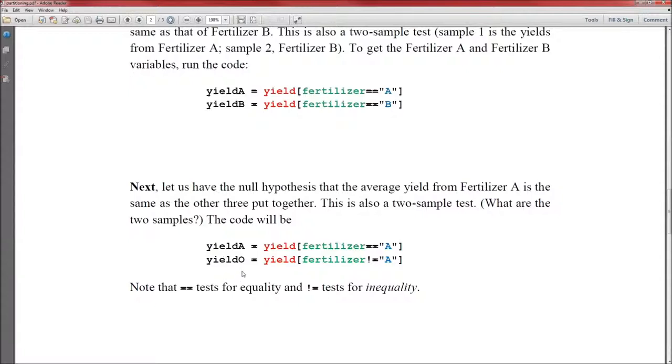How do we create yieldO? It's just yield[fertilizer != "A"]. Exclamation point equal tests for inequality. Equal equal tests for equality. So what this second line does is it goes through all of the records, finds all those records where fertilizer is not equal to A, and for those, it takes the yield and stores it into a new variable called yieldO.